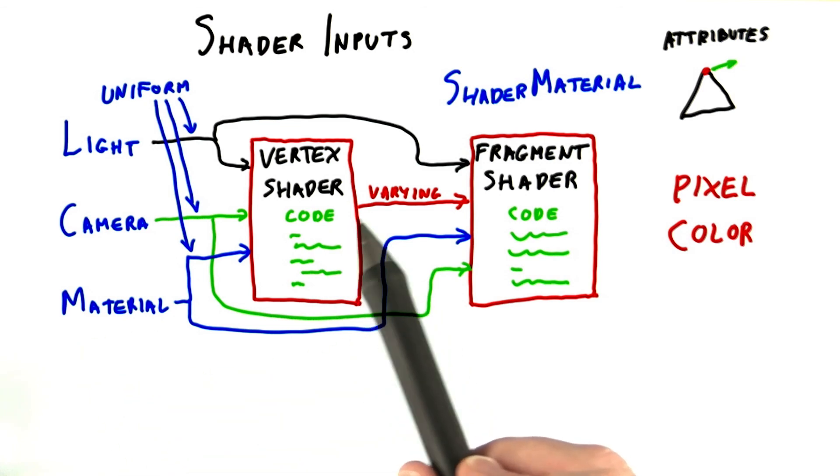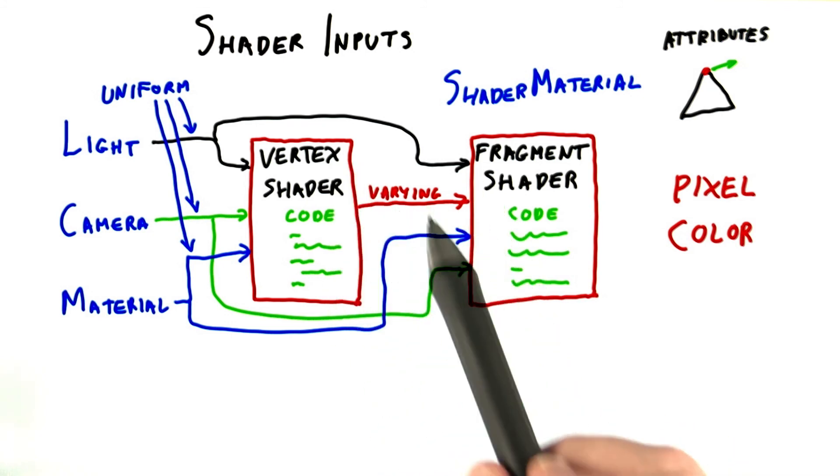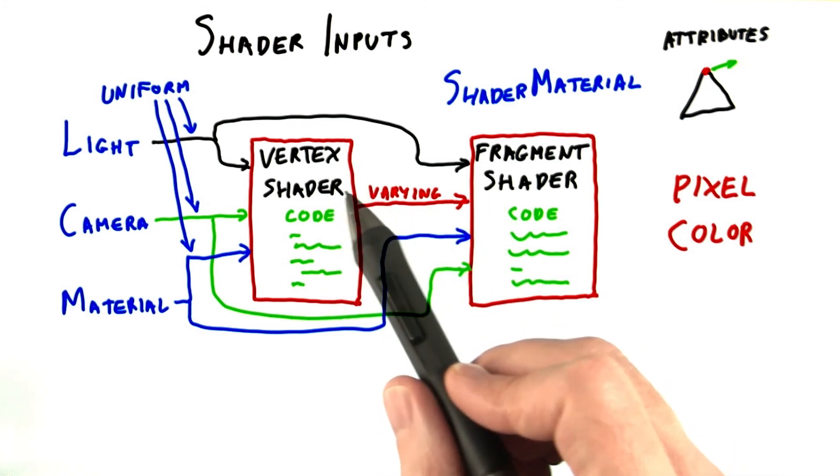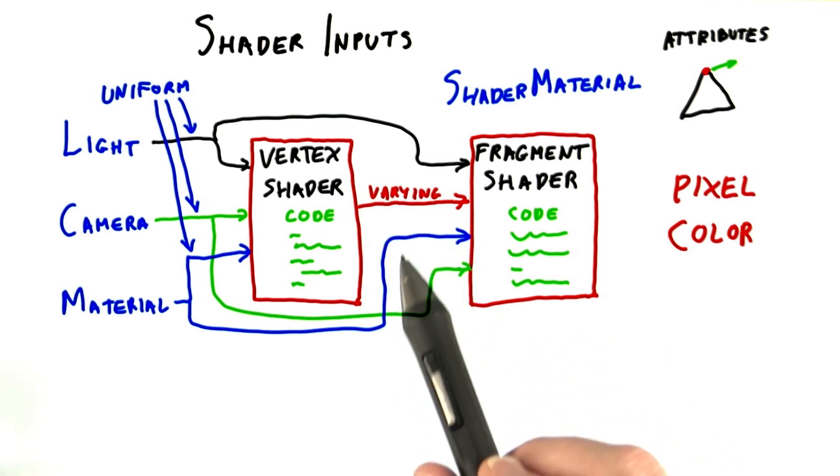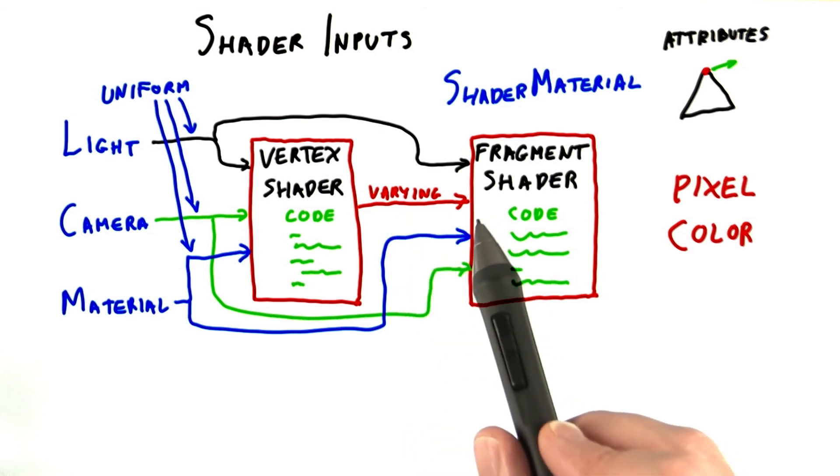A value is labeled as varying if it is computed or set by the vertex shader as an output and passed to the fragment shader as an input. The vertex shader outputs these values, and then the rasterizer interpolates them across the triangle surface. In other words, these values can and will vary per fragment.